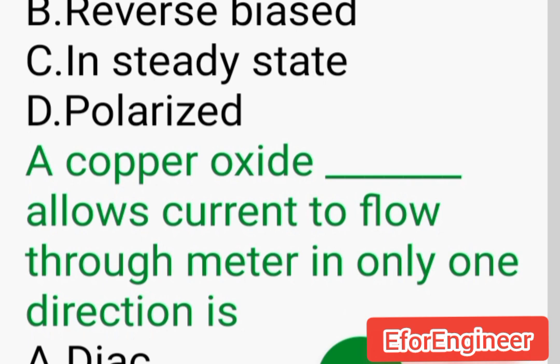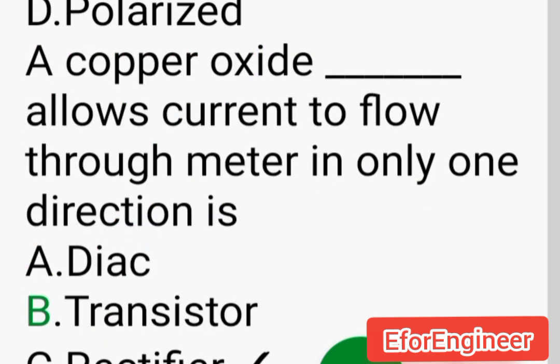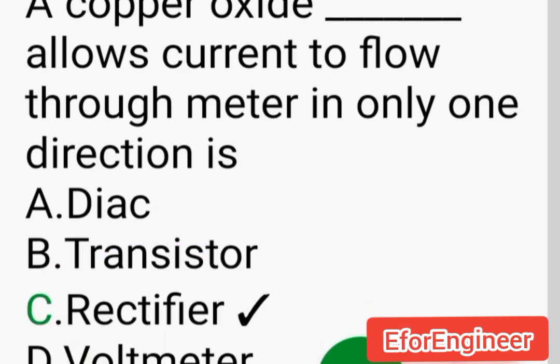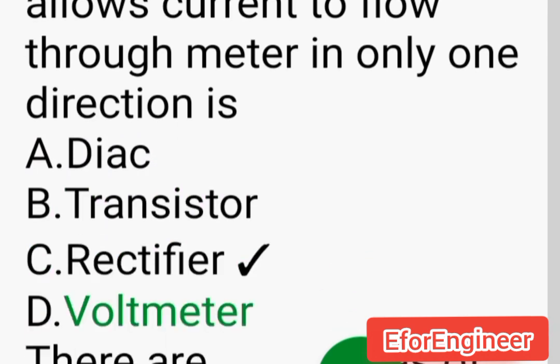A copper oxide ___ allows current to flow through meter in only one direction: A. Diac, B. Transistor, C. Rectifier, D. Voltmeter.